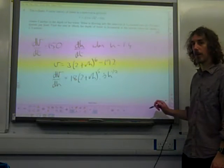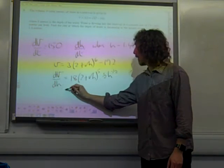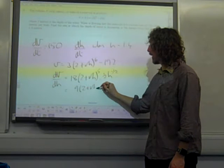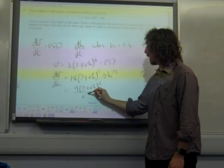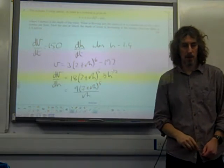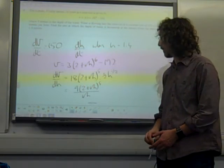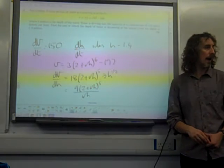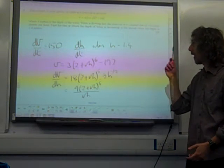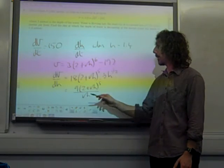If we simplify what we've got here, I think let's write it as being 9 times (2 plus root H) to the 5 over root H. Is that alright to think of it like that? Right. So where are we going with this now? We've got dV by dH. We're supposed to be finding dH by dt.